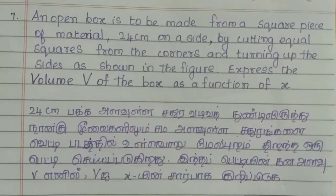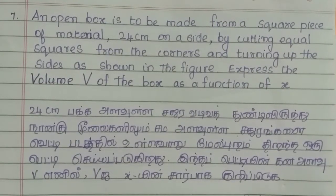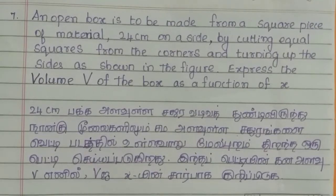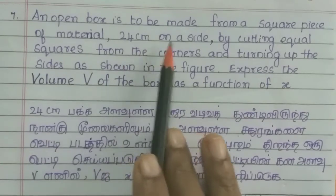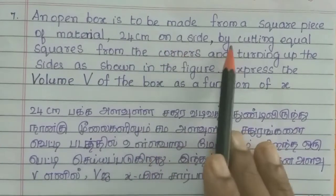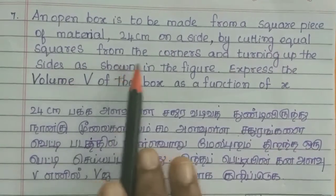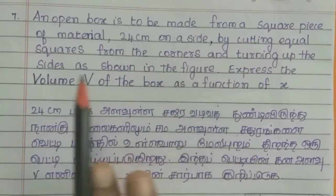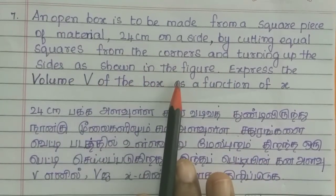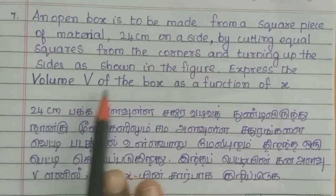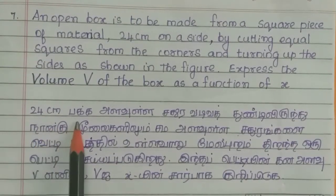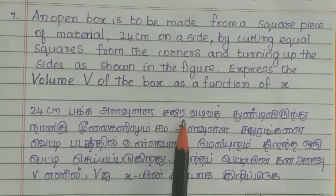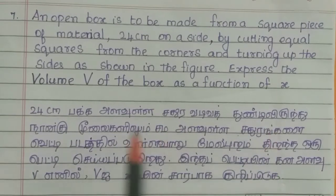Students, Ipoh exercise 1.3, question 7. An open box is to be made from a square piece of material 24 cm on a side by cutting equal squares from the corners and turning up the sides as shown in the figure. Express the volume V of the box as a function of x.